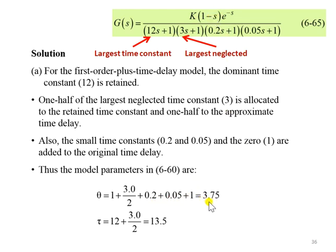And we have the total of 3.75 which is the time delay. And then the time constant, we have reserved just now the largest time constant equivalent to 12, but we will plus 3 over 2 which comes from the half, Skogestad's half rule here. So we finally have the tau is equivalent to 13.5.